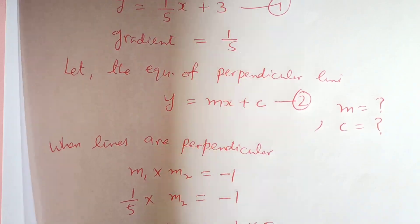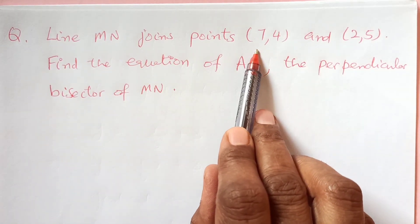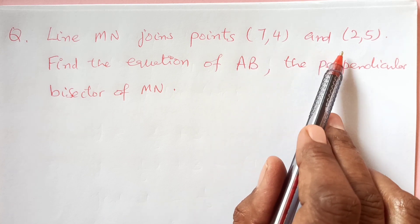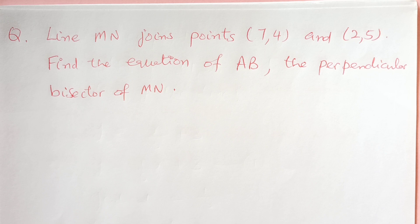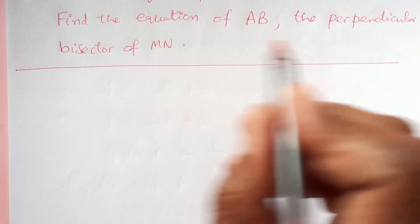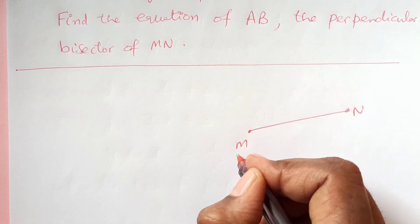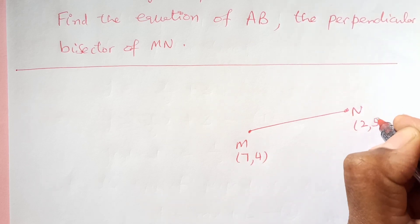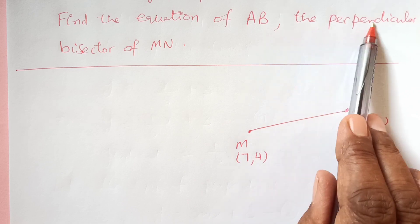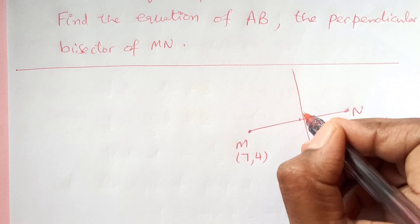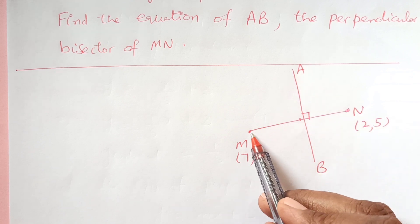Let's take another example. Line MN joins points M(7, 4) and N(2, 5). Find the equation of AB, the perpendicular bisector of MN. So we have point M and point N. The perpendicular bisector AB is the line that passes through the middle of MN. We need to find the equation of this line.